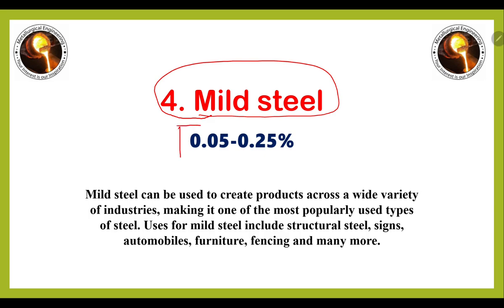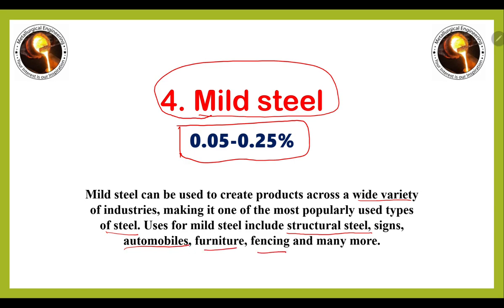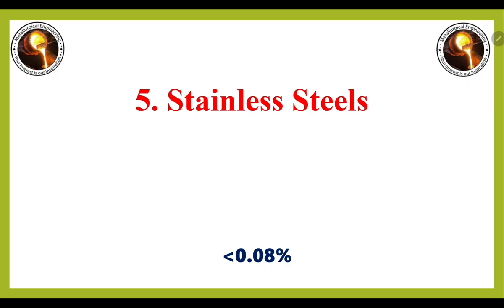Next on the list is mild steel, which is also a type of low carbon steel, in which the carbon percentage varies from 0.05 to 0.25 percent. Mild steel can be used to create products across a wide variety of industries, making it one of the most popular types of steel. It is used in structural steels, automobiles, furniture, fencing, and many more applications.